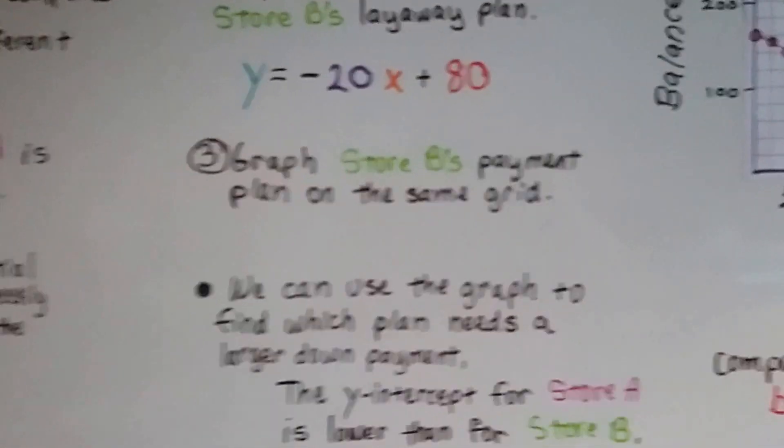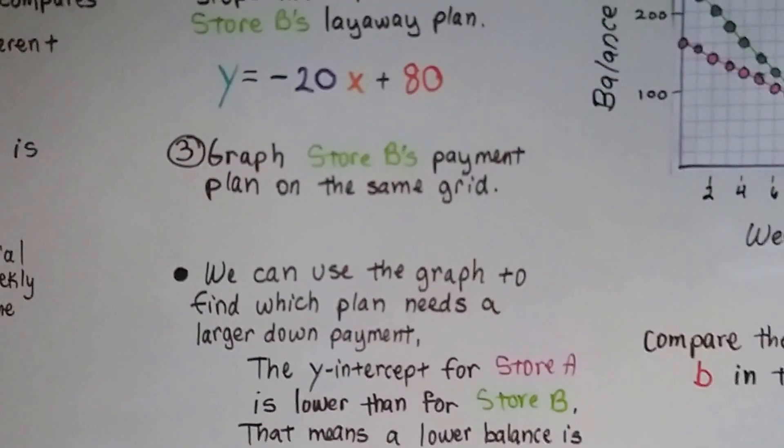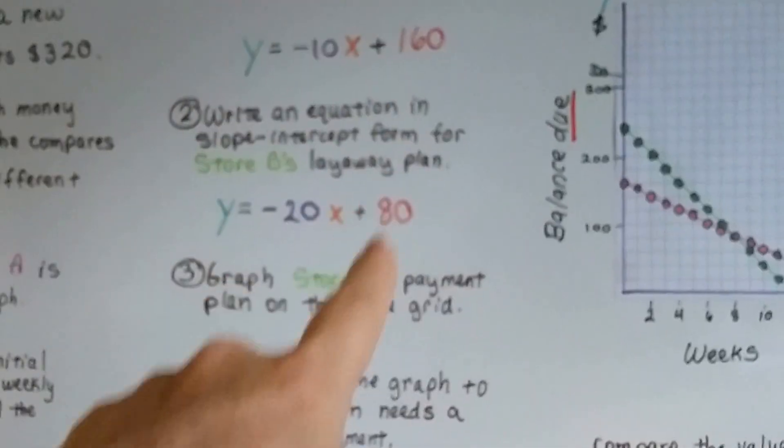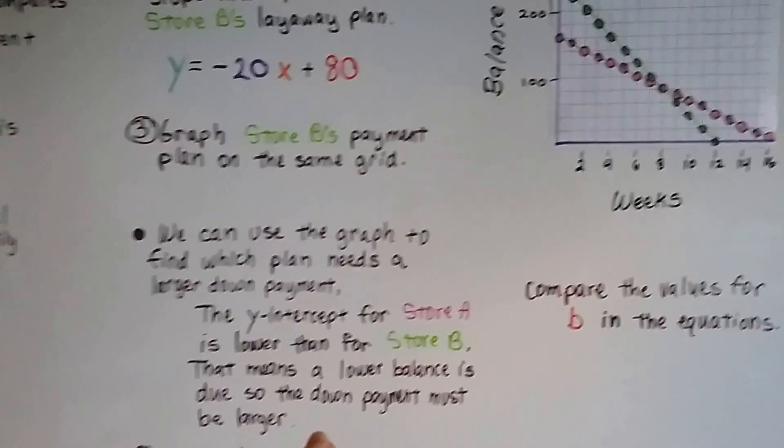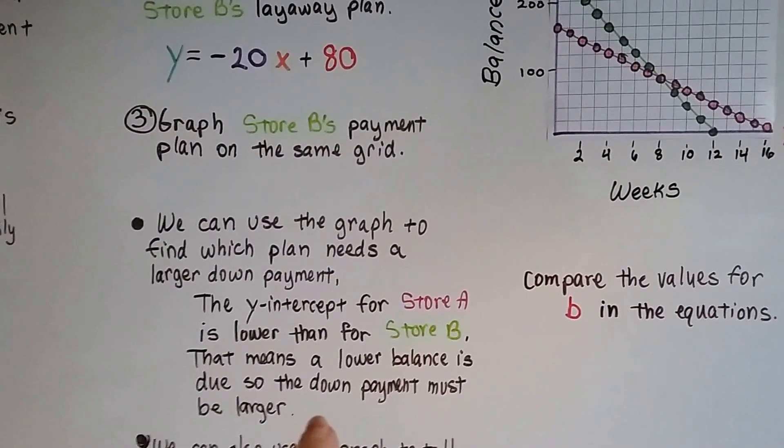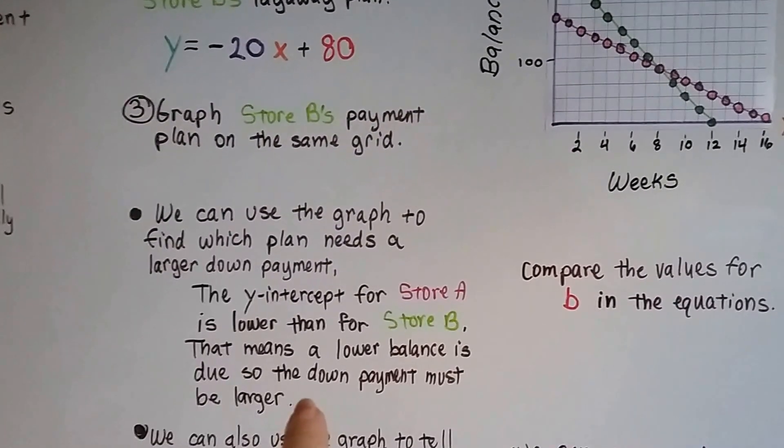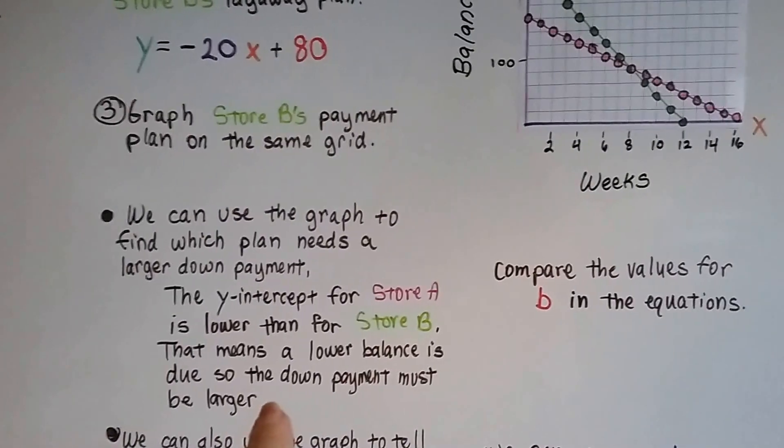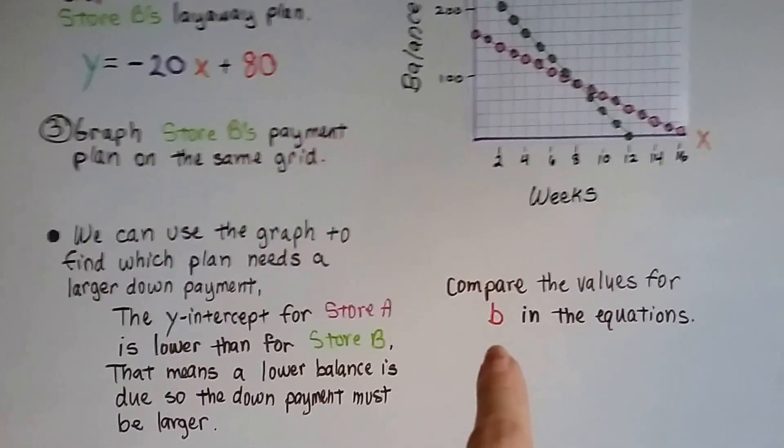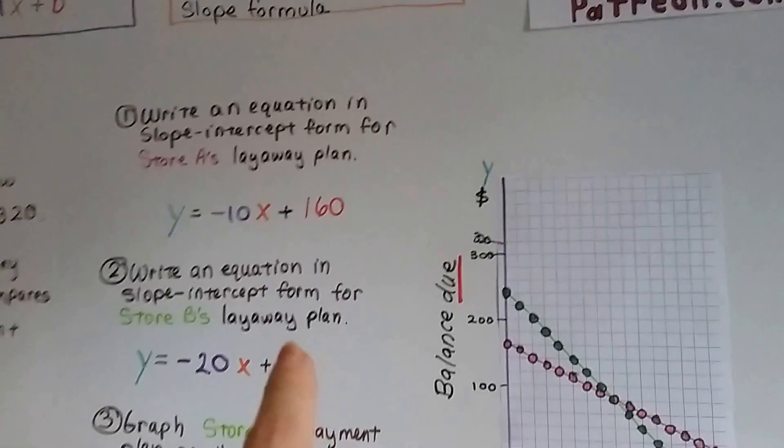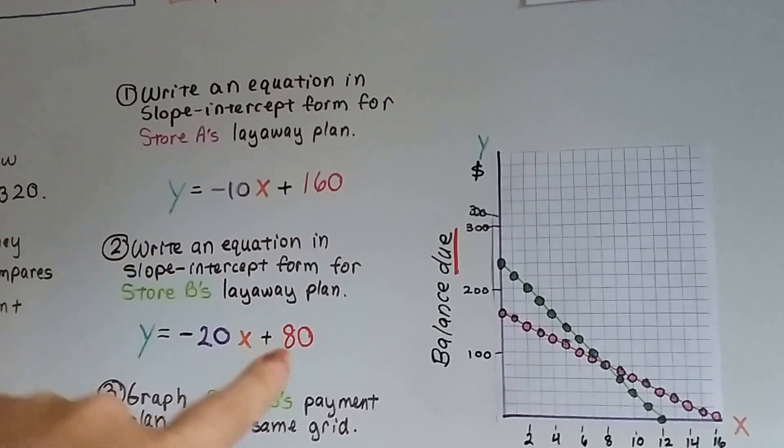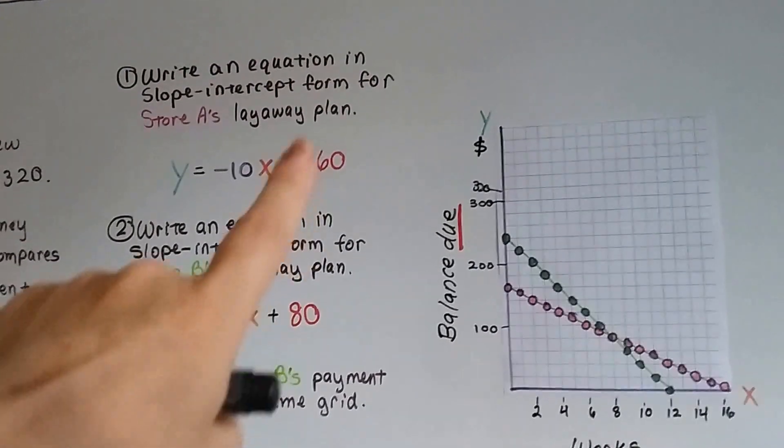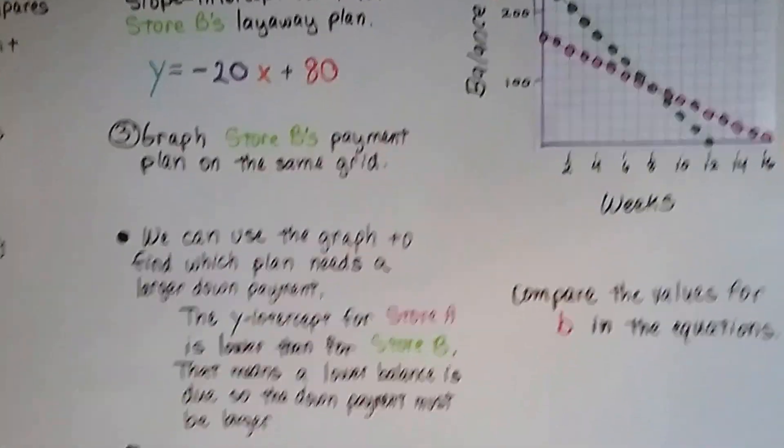We can use the graph to find which plan needs a larger down payment. We can see right here. The y-intercept for store A is lower than for store B. That means the lower balance is due, so the down payment must be larger. We compare the values for B in the equation. Store A wanted a $160 down payment. Store B wanted $80. So that's a huge down payment. That's half of it.